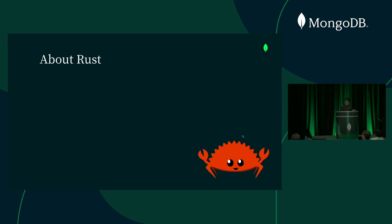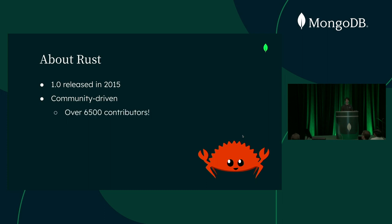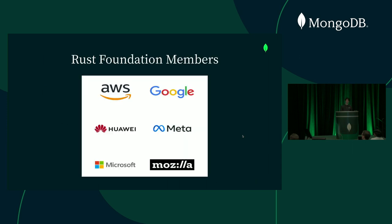Some more info about Rust: it's a really young language — its 1.0 was only released in 2015. This is actually a nice thing because it means it's not weighed down by a lot of legacy decisions from a long time ago. It's also largely community driven, with over 6,500 open source contributors. While it was originally started at Mozilla, these days it's governed by an independent nonprofit called the Rust Foundation, whose members include representatives from some of the biggest names in tech. So it's not just a hobbyist language — it also has serious corporate backing.